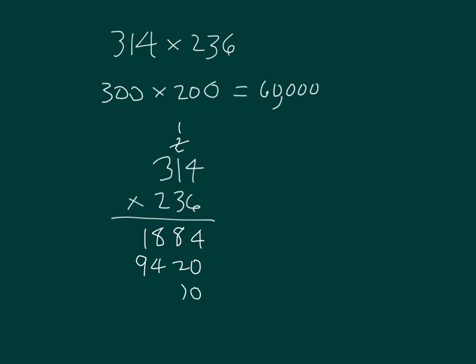My third partial product, I place two 0's because the 2 is worth 200. 2 times 4 is 8. 2 times 1 is 2. And 2 times 3 is 6. Then I carefully add those together. You'll notice my places are lined up.